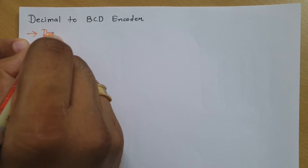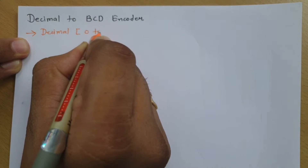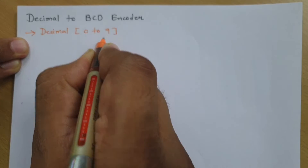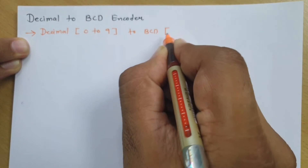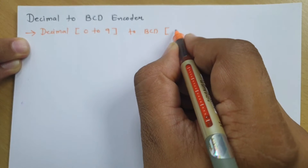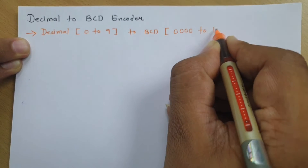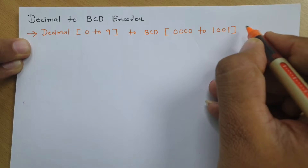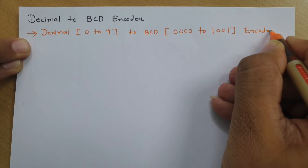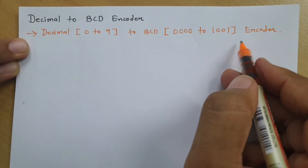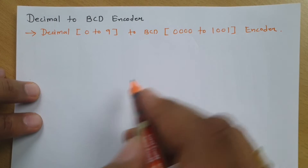Decimal means 0 to 9, right? And BCD is binary coded decimal, so that is changing from 0000 to 1001. From the name itself we can easily design a decimal to BCD encoder.